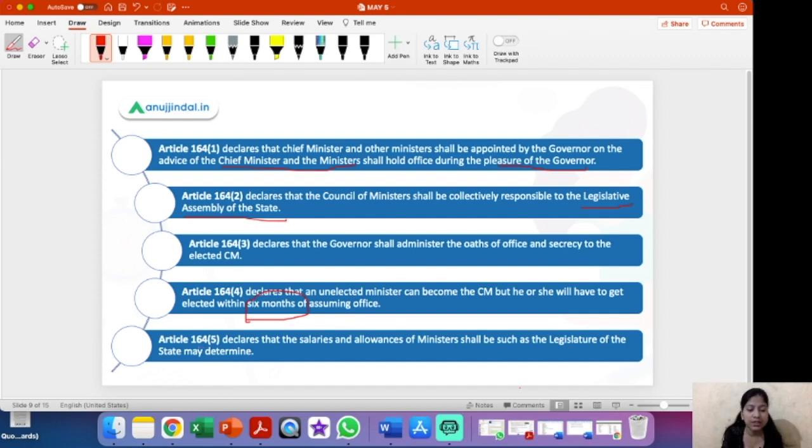Next is Article 164 sub-clause 5 that declares that the salaries and allowances of ministers shall be such as the legislature of the state may determine. So that will be decided by the legislature of the state. So that was all about Article 164 and the sub-clauses of this article.